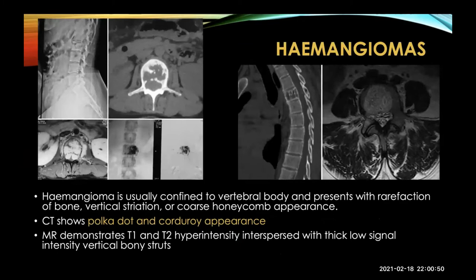Hemangiomas may be benign — the most common type — but can also be aggressive and highly vascular. On CT, you see a classic polka-dot and corduroy appearance. On MRI, there is T1 and T2 hyperintensity interspersed with thick low-signal-intensity vertical bone struts. You can appreciate this across multiple modalities: X-ray, CT scan, MRI, and DSA, where the DSA confirms it is a highly vascular tumor.